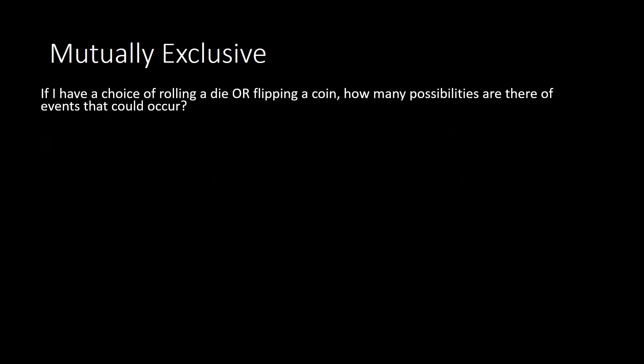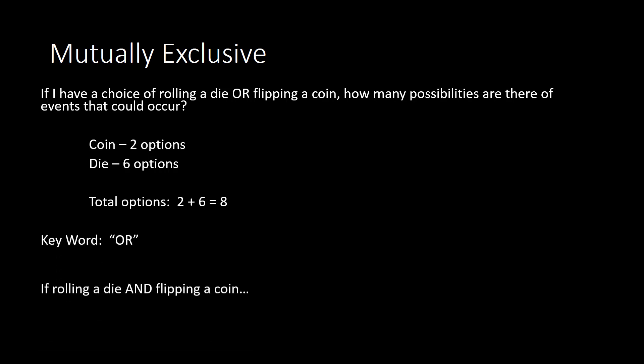With mutually exclusive events, it is impossible for them to occur at the same time. For example, a coin cannot land on heads and tails at the same time, and you cannot roll a 5 and a 6 on a die at the same time. So if you had a choice of rolling a die or flipping a coin, how many possibilities are there? For rolling a die we have 6 options, and for the coin we have 2. If you can only do one or the other, the total is found by adding: 2 plus 6 equals 8. But if you were to roll a die and flip a coin, you'd do 2 times 6, or 12.